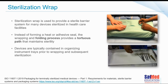Sterilization wrap is used to provide a sterile barrier system for many devices sterilized in healthcare facilities. Instead of forming a heat or adhesive seal, the wrapping and folding process provides a tortuous path that maintains sterility. Devices are typically contained in organizing instrument trays prior to wrapping and subsequent sterilization. That tortuous path — the folding — matters. It is stated right at the beginning of the standard: it is a critical endeavor, and how we do this really and truly does matter.